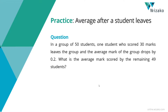This is an averages question. The concept covered is basically when we have information about what changes happen to the average when an element is either removed or added to a group. These questions can be solved using two methods. One, the standard framework. I'm a big fan of that method because this method will apply neatly for any question in averages.